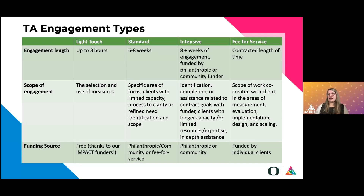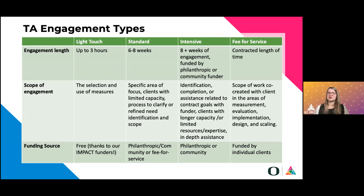We have four main engagement types for technical assistance, otherwise known as TA. The one through the website is called our light touch — when you go to the website and scroll to the bottom, it'll say 'request consultation.' You can get up to three free hours with our consultants around the selection and use of measures, and that is free thanks to our wonderful impact funders. That is the quickest entry point with our technical assistance.